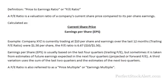Earnings per share, or EPS, is usually based on the last four quarters — this would be a trailing PE ratio. But sometimes it's taken from estimates of future earnings expected in the next four quarters; this is known as a projected or forward PE. A third version would be the sum of the last two quarters and the estimate of the next two quarters, though that's rare.